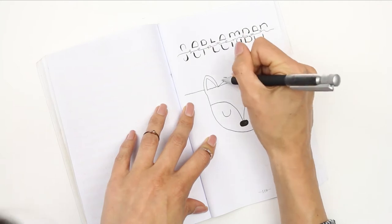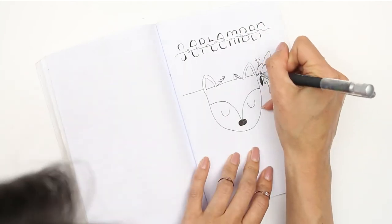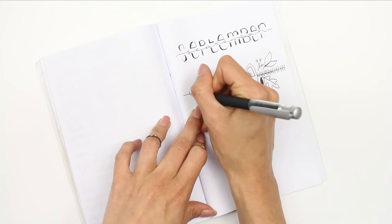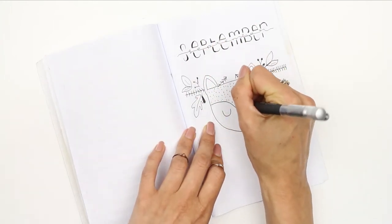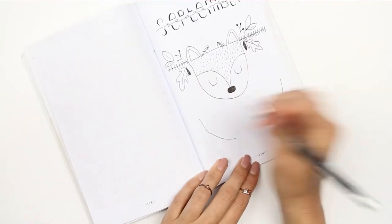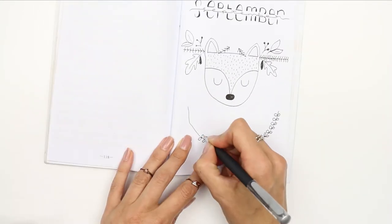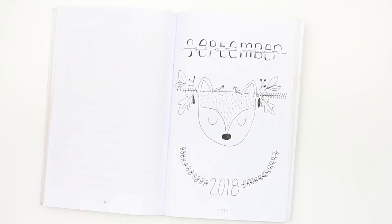I wanted to keep this kind of doodly or child drawn kind of feel or vibe and I was inspired to do woodland creatures as I was away camping last week. So I just drew a little fox with some leaves and then at the bottom I just put 2018.